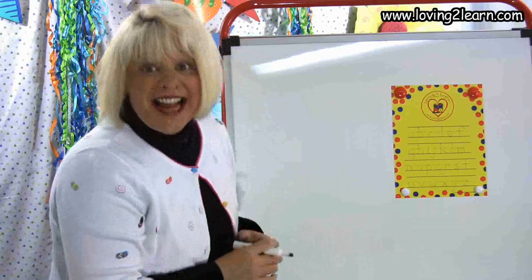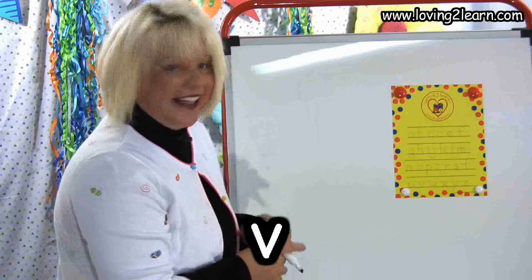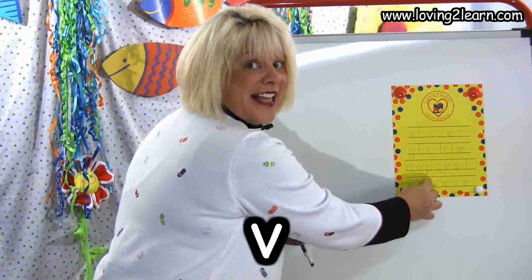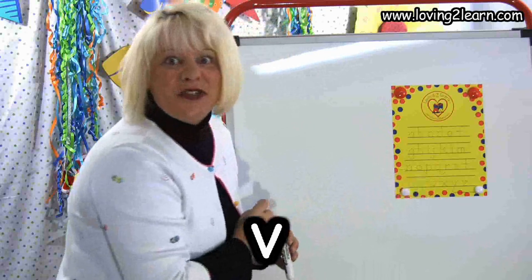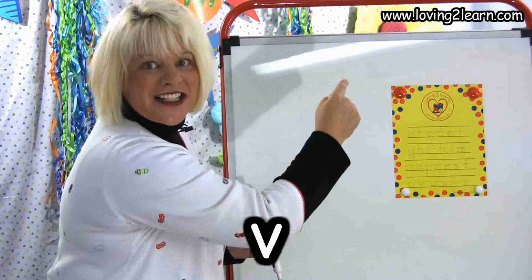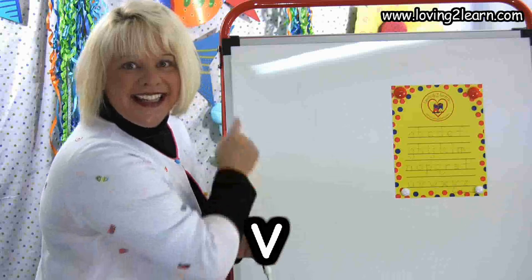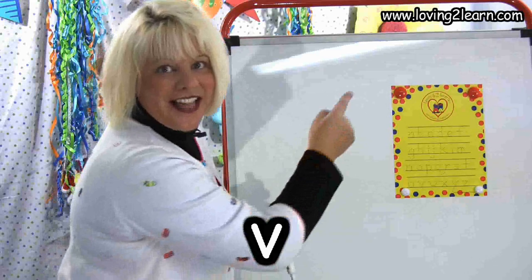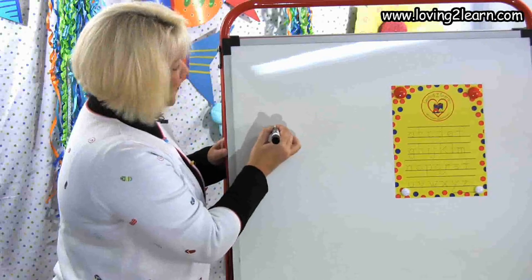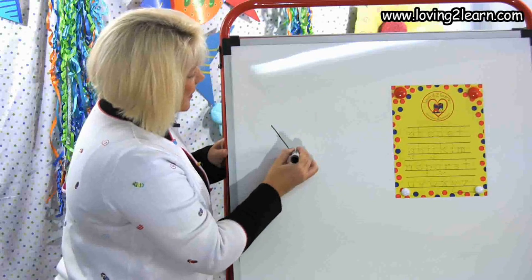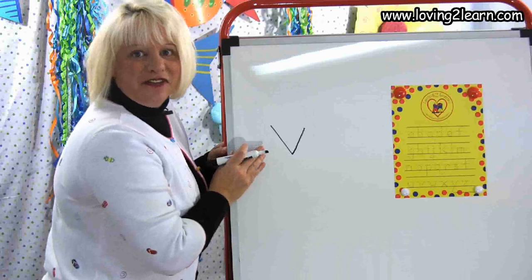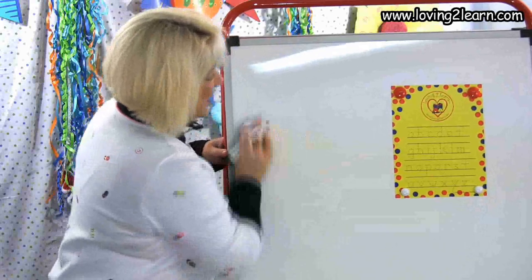The next letter is the letter V. We go slanted line down, slanted line up. Let's do it in the air: slanted line down, slanted line up. We'll do it on the wipe-off board: slanted line down, slanted line up. There's the letter V.